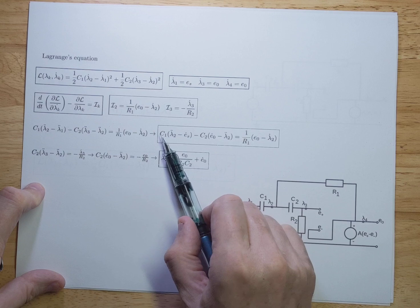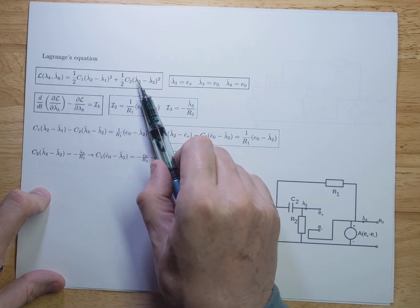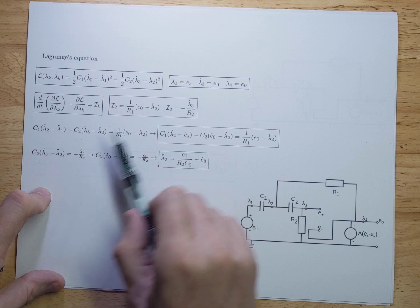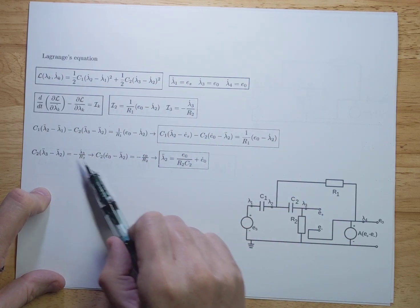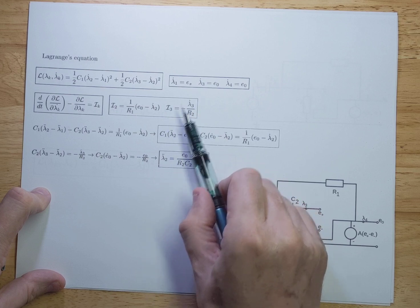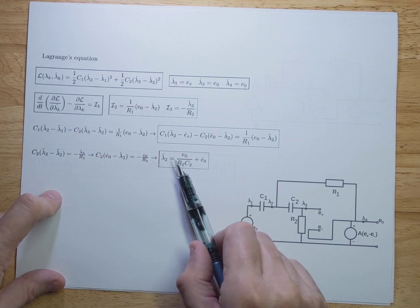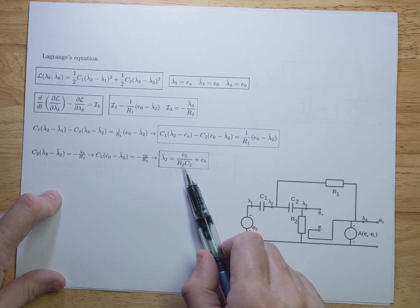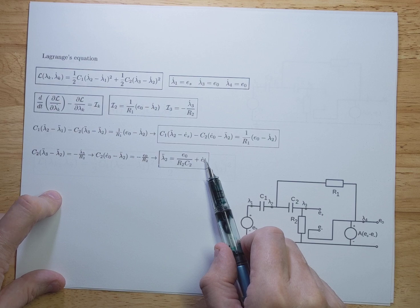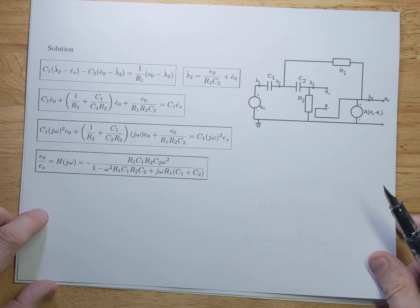Now we have our first equation of motion and we can go to the second one. We differentiate the Lagrangian with respect to lambda 3 dot. There's only one term, giving C2 times lambda 3 double-dot, which is E0 single-dot, and a lambda 2 double-dot term. That equals the generalized current I3, which is minus lambda 3 dot — or E0 minus E0 — over R2. Rewriting gives lambda 2 double-dot equals E0 divided by R2 C2 plus E0 single-dot.